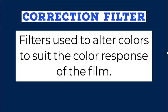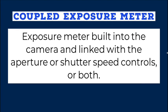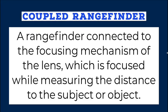Correction filter: filters used to alter colors to suit the color response of the film. Coupled exposure meter: an exposure meter built into the camera and linked with the aperture or shutter speed controls, or both. Coupled range finder: a range finder connected to the focusing mechanism of the lens, which is focused while measuring the distance to the subject or object.